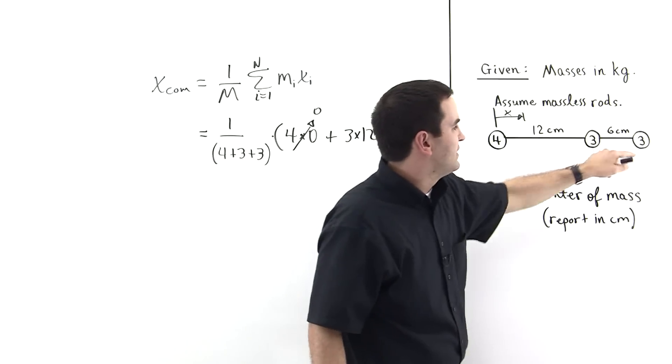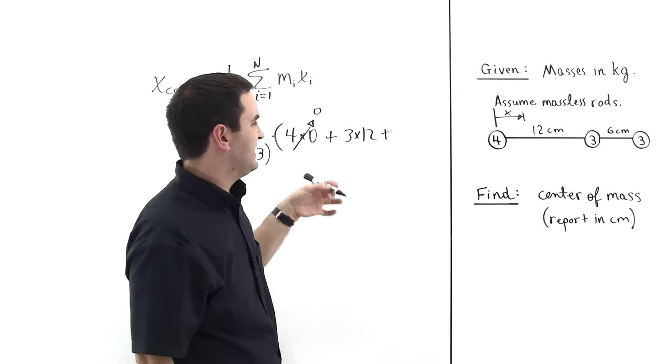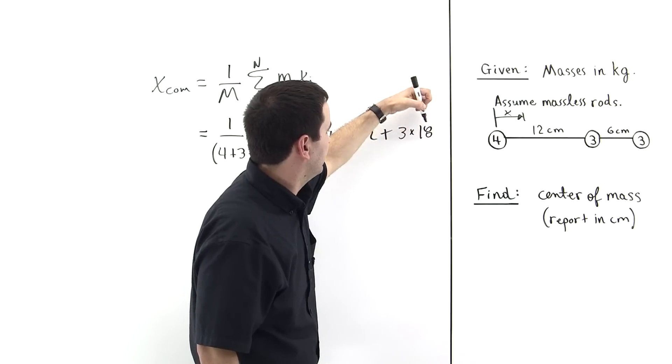Plus, this last one is three, but it is a distance of twelve plus six away, it's eighteen, which is eighteen centimeters. So we have three times eighteen.